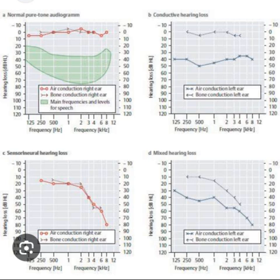A typical audiogram measures thresholds at frequencies including 250, 500, 1000, 2000, 3000, 4000, 6000, and 8000 Hz — a range slightly broader than that of human speech. The primary speech frequencies fall between 500 and 4000 Hz, although normal human hearing ranges from approximately 20 Hz to approximately 20,000 Hz.